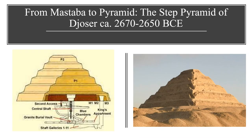Some archaeologists think that mastabas formed the basis of the first pyramids. They think that early Egyptians built a series of mastabas on top of each other, which would eventually evolve into pyramids later in the period. Here are some diagrams of the step pyramids, namely the step pyramid of Djoser, which was designed by Imhotep. Just like the old mastabas, the burial chambers are beneath the pyramid, not inside the step pyramids.